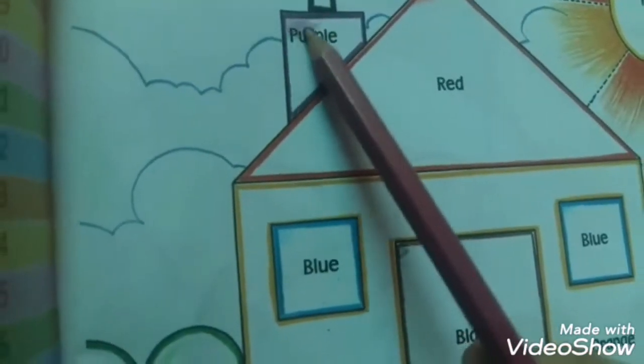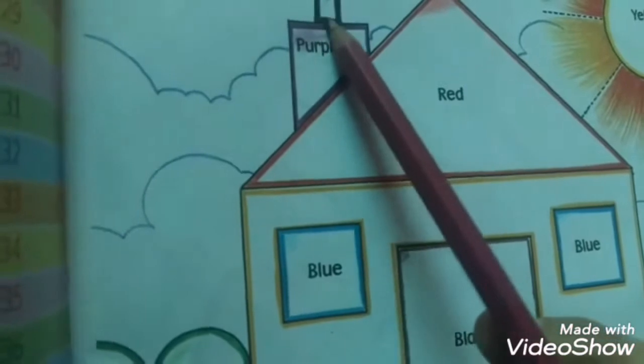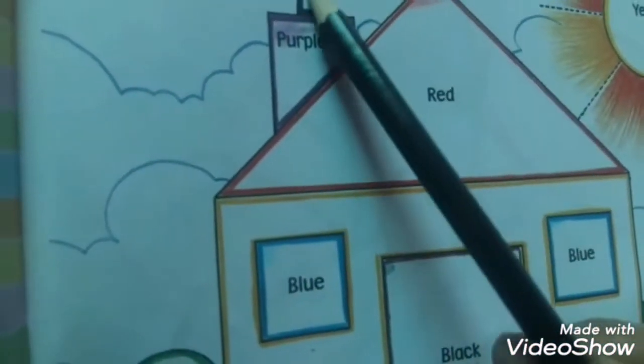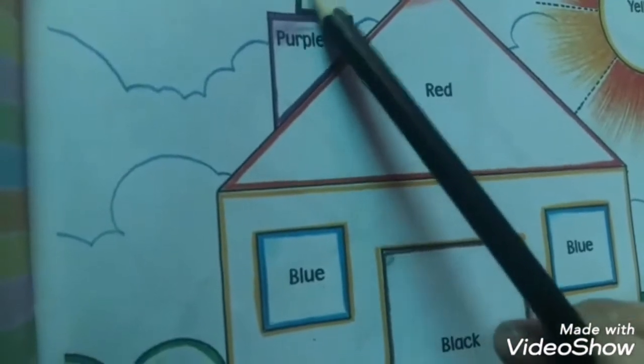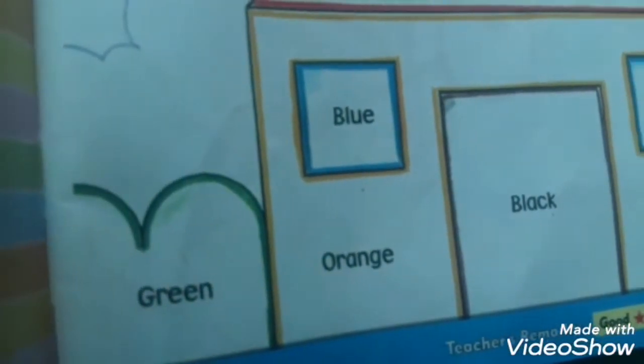Students, there are mentioned the name of every color in every portion. That's why you will follow the name of the color and color it. Green, this is black color. Now look, its windows.